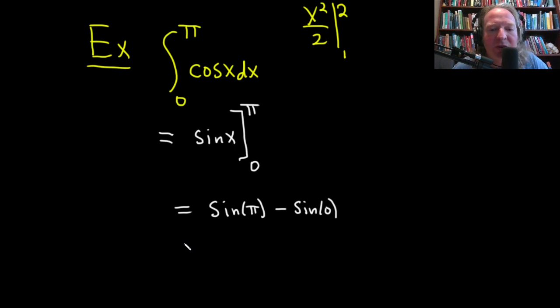On the unit circle, sine is the y-coordinate. So here's the unit circle. This is 0, this is pi. And you see that sine is the y-coordinate on the unit circle. So at 0, it's 0, at pi, it's 0. So you get 0 minus 0, so you get 0. So that's the answer there.